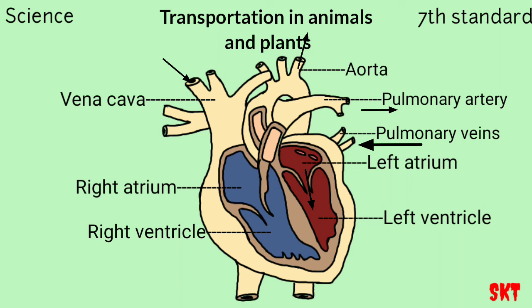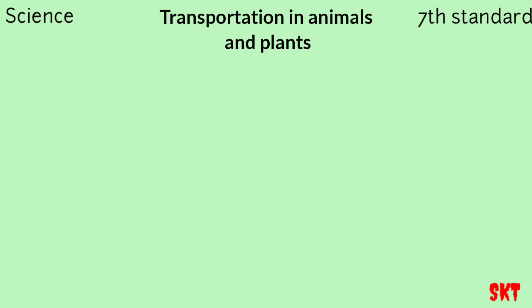It may seem complicated, but if you look at it four to five times you will understand — there is no complication. First learn the names of all parts of the heart, then try to remember the cycle and you will understand the whole thing easily. Now let's move on to the next topic: heartbeat.